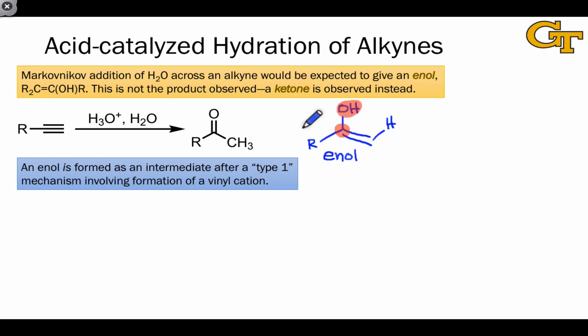The enol isn't the final product in acid-catalyzed hydrations of alkynes. Under the reaction conditions, it converts rapidly into an isomeric product known as the keto form. Notice that the difference here is that the OH group is now simply a doubly bound oxygen and the CH2 group on the end of the alkene in the enol is now a CH3 group. A hydrogen has migrated from oxygen to carbon.